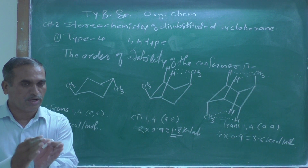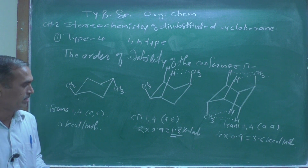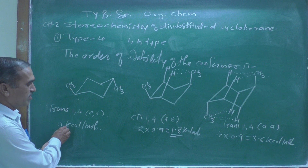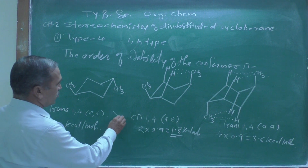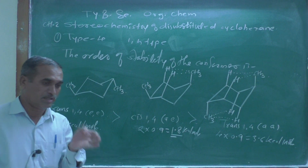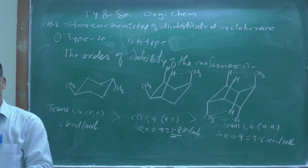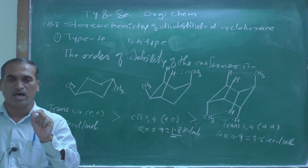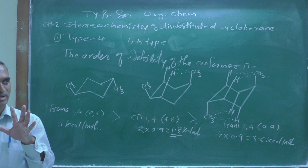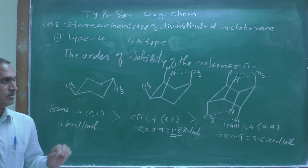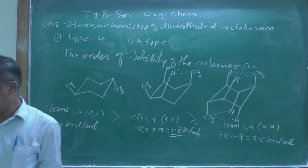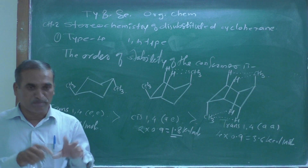Therefore, the most stable conformer is the equatorial-equatorial form, which has zero internal energy. The equatorial-equatorial conformation is always more stable than the axial-equatorial, which in turn is more stable than the axial-axial conformer. This is the order of stability of conformers.